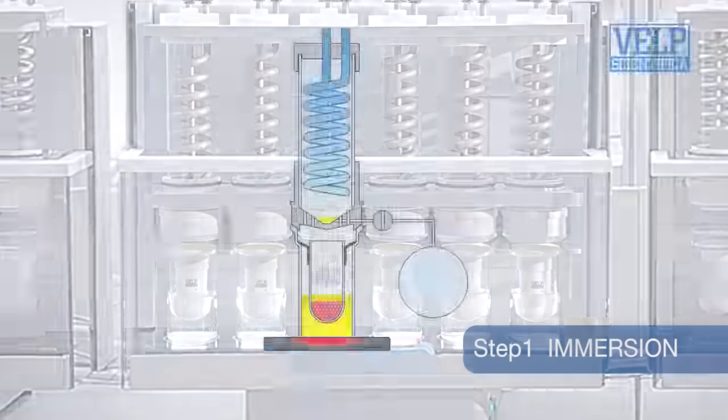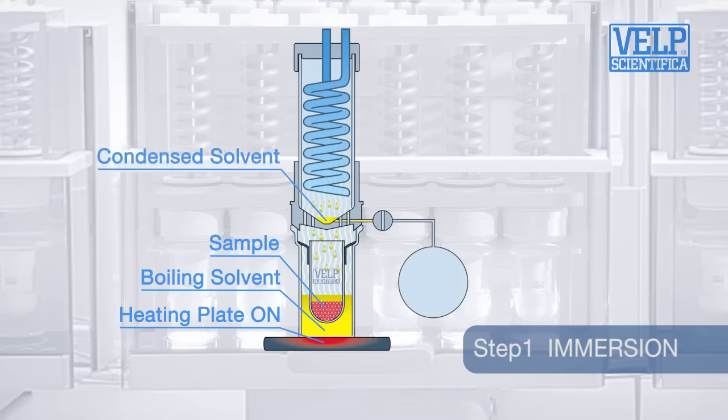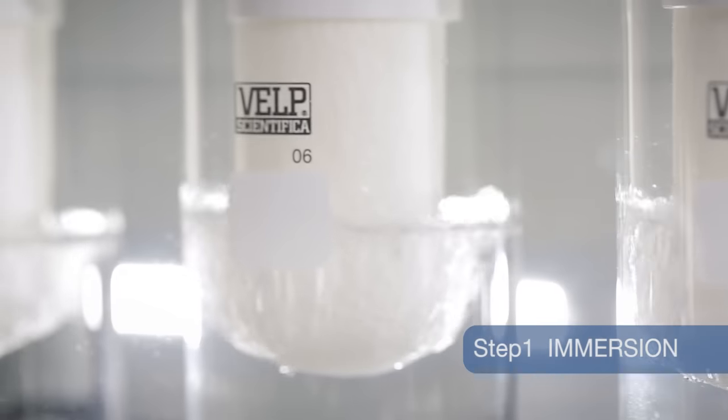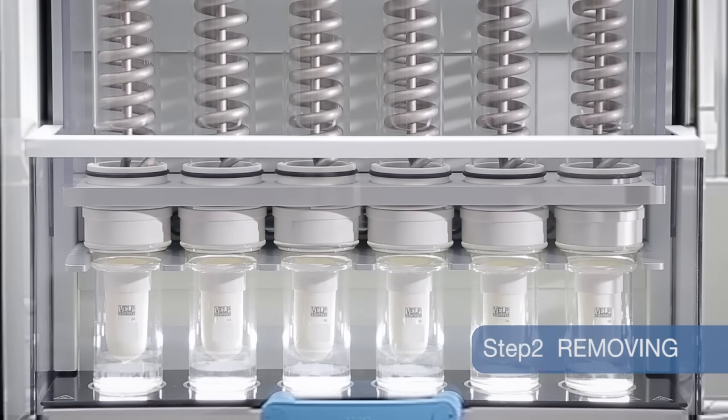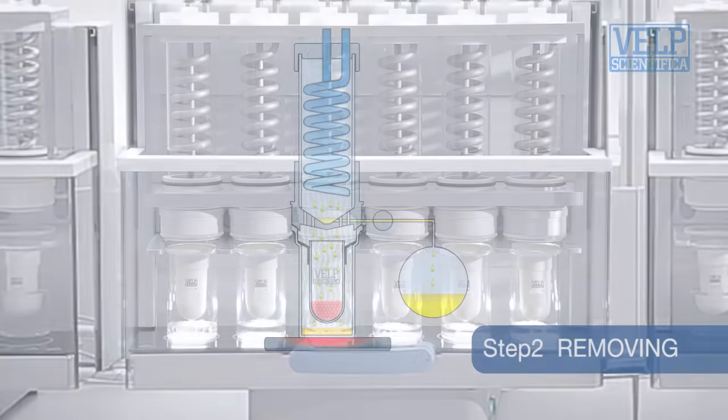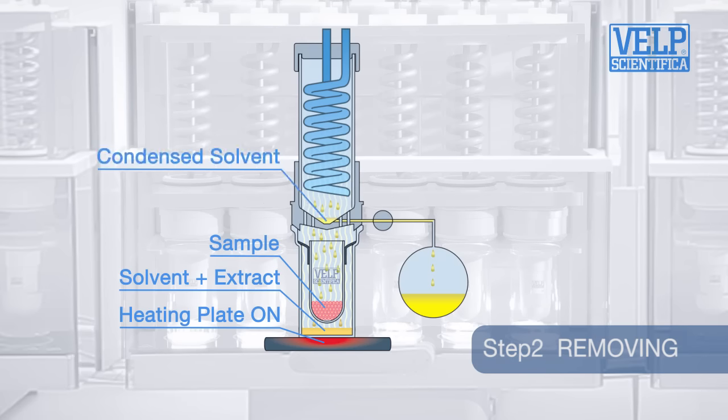During immersion, the sample is immersed in boiling solvent. The removing step automatically lowers the level of solvent to below the extraction thimble.